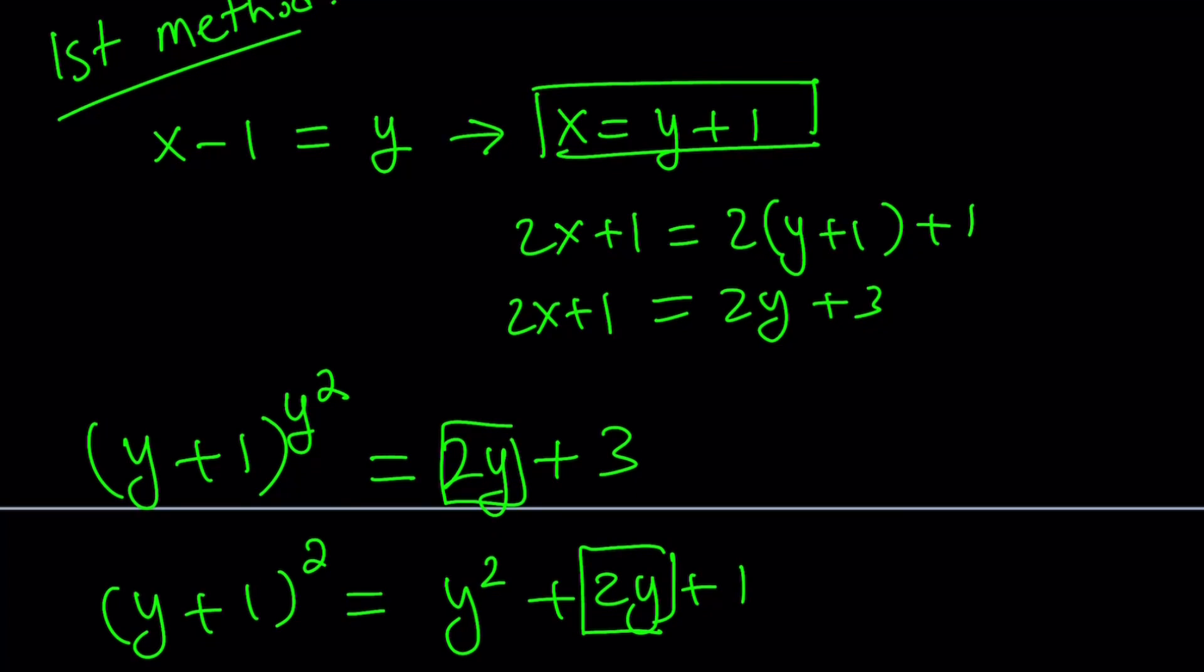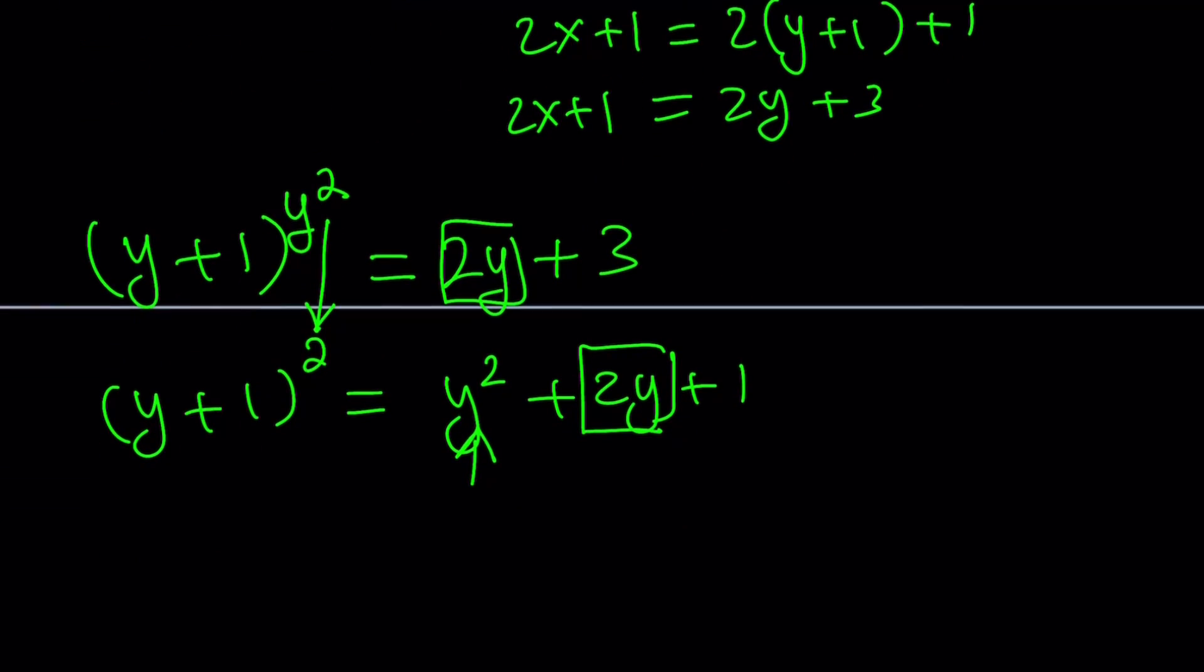But at the same time, what happens if you replace y² with 2? And that actually implies if you replace y² with 2, then you actually get 2y+3, which is what we have here.